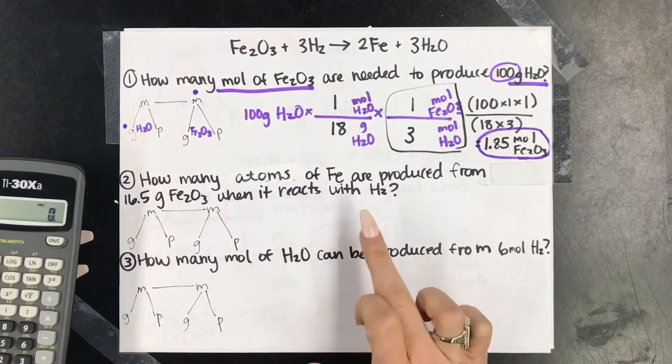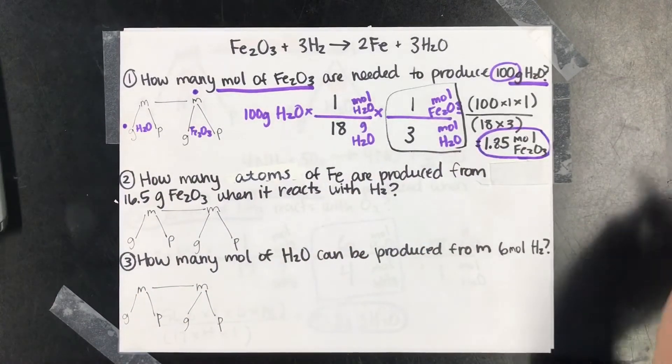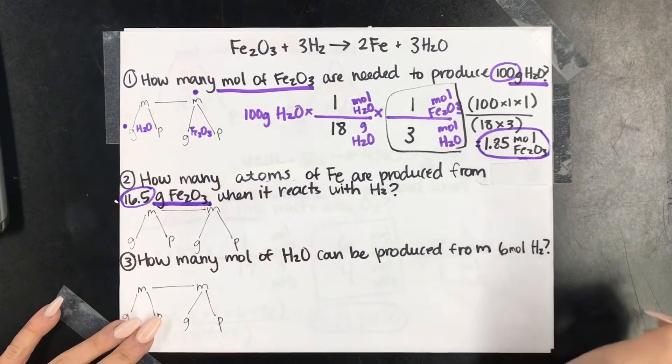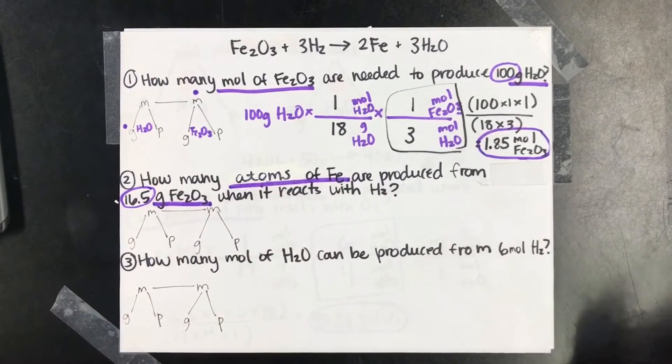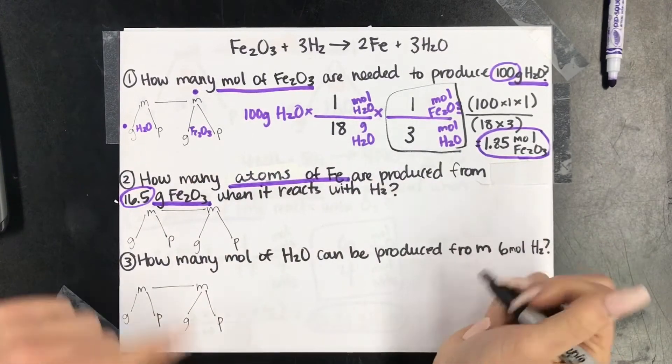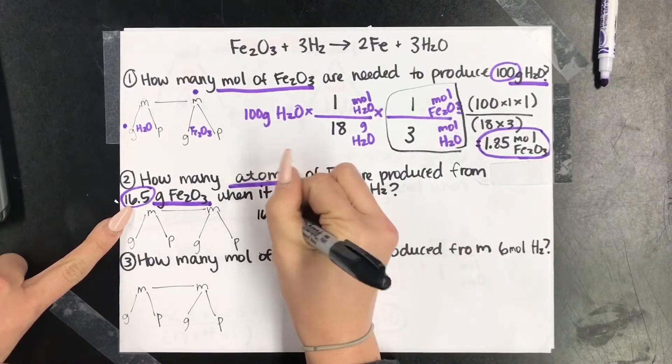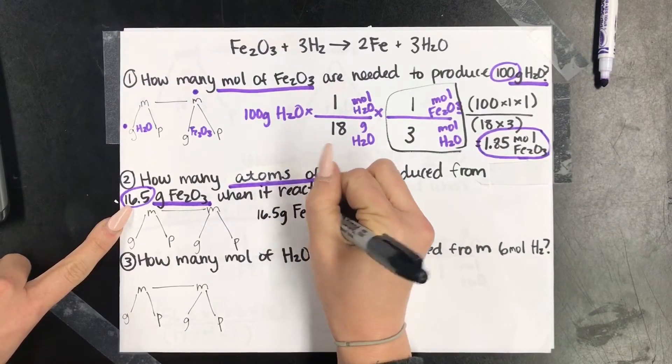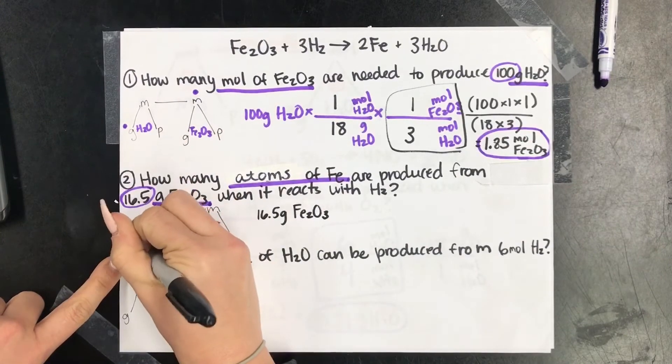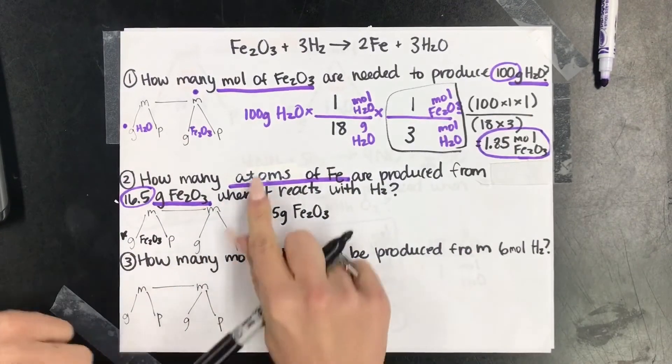So we're just going to keep trucking along. Again, if you need to pause it and you want to try it and catch back up with this, feel free to do that. With this one, we have 16.5 grams Fe2O3 and then I see atoms of Fe. Notice, H2 is irrelevant. There are no units attached to it. So we always start with the number and the unit attached to it. That means we're starting here at grams. Then we are going towards atoms, which is particles. So we're going towards atoms of Fe, so this will be one, two, three steps.